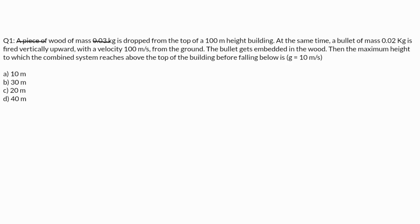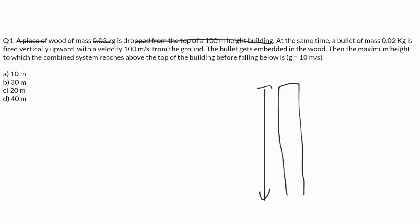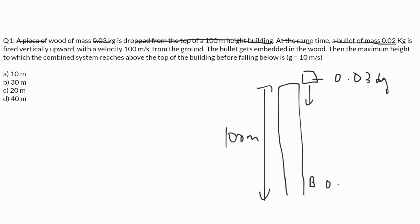A piece of wood of mass 0.03 kg is dropped from the top of a 100-meter height building. At the same time, a bullet of mass 0.02 kg is fired vertically upward with a velocity of 100 meters per second from the bottom of the building. The bullet gets embedded in the wood.